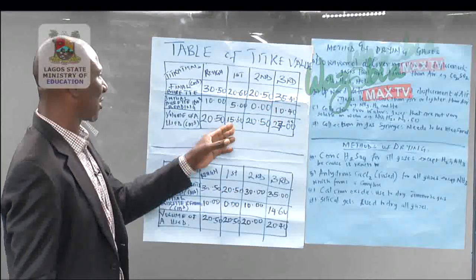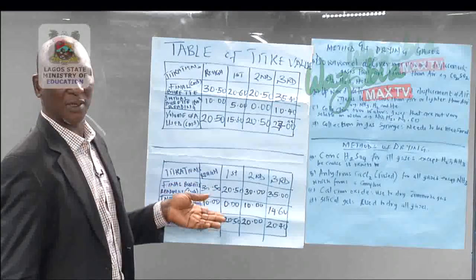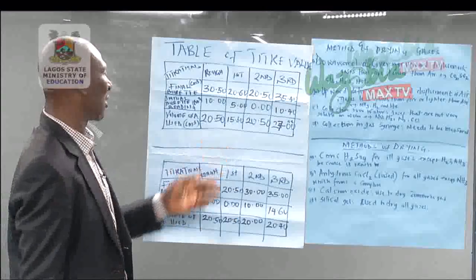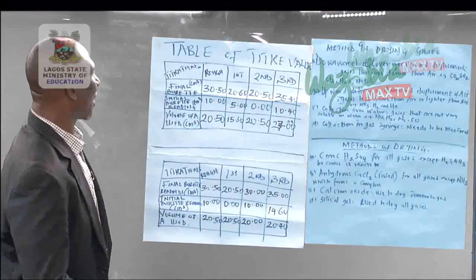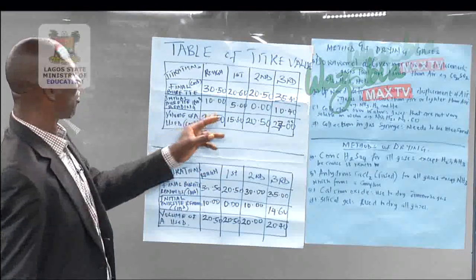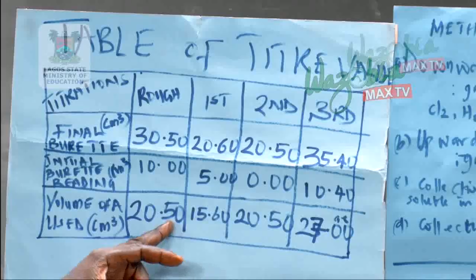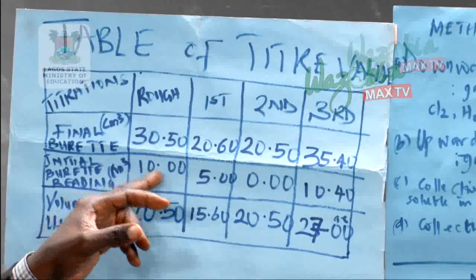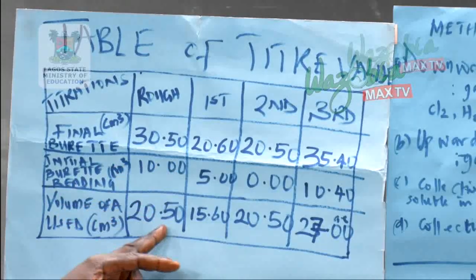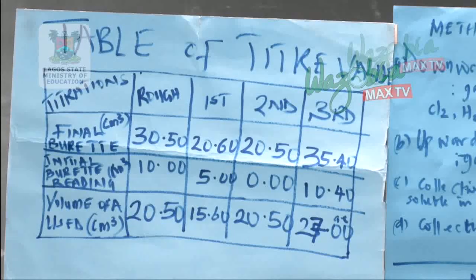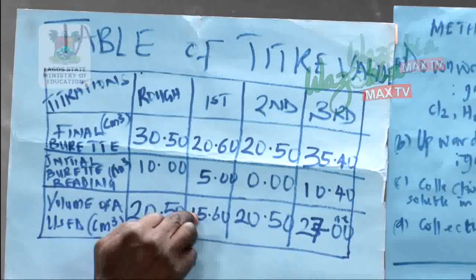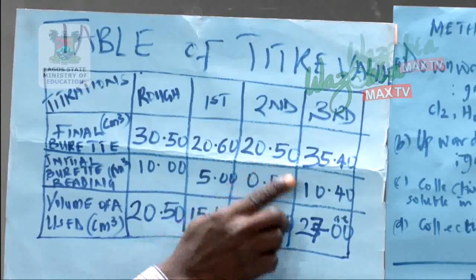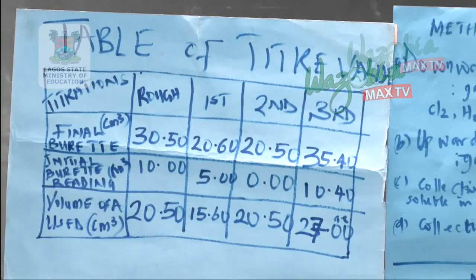Because that is where students lose marks. Out of those 22 marks, they can end up having only two or three or five marks. Now, from the table, look at where you have: the first one here is 20.50. The volume of acid you have is 30.50 by 10.00. The first trial volume can be 15.0 — that is the total volume of acid used — and the second one, 20.50, and then the third one, 27.00.